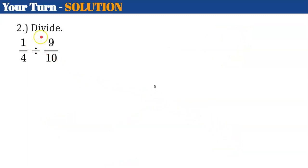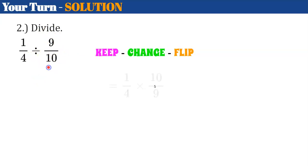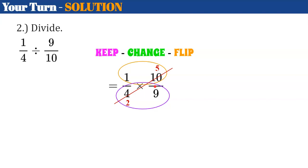Number 2 was for us to divide. So keep, change, flip — change division to multiply and flip nine-tenths to find the reciprocal, which is ten-ninths. Looking for common factors, I see a common factor of 2 between the 10 and the 4. Ten divided by 2 is 5, and 4 divided by 2 is 2. Now multiply numerators and denominators: 1 times 5 is 5, and 2 times 9 is 18. Five eighteenths is in simplest form.